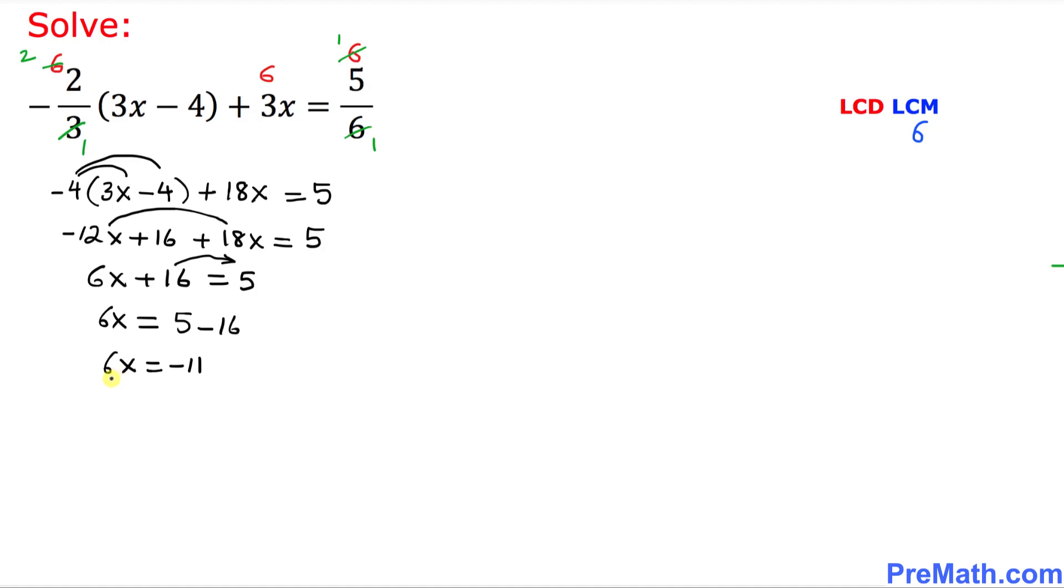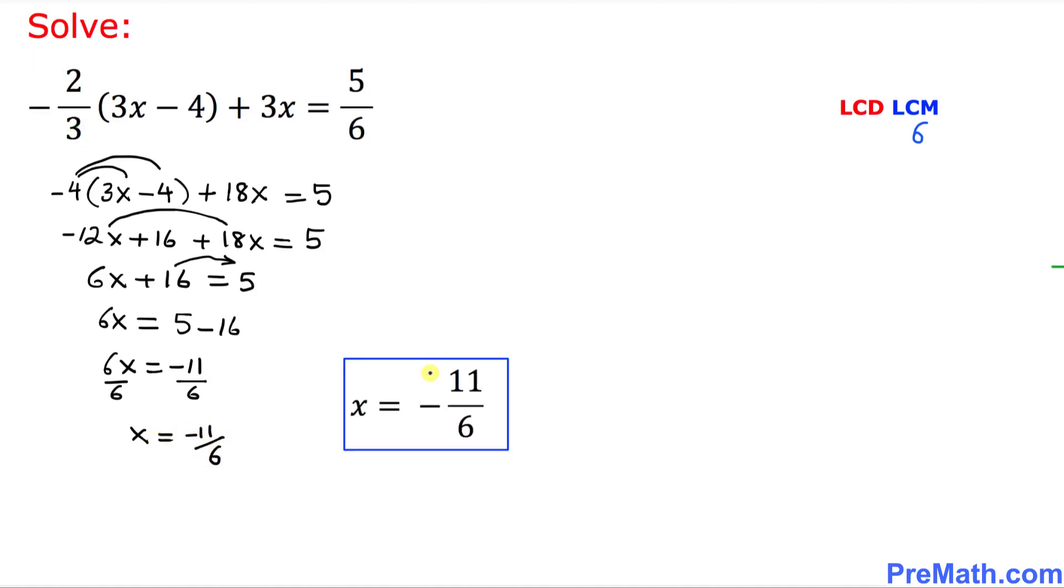Let's simplify. Let's isolate x. We're going to divide both sides by 6. So x turns out to be negative 11 over 6. Thus our solution turns out to be x equal to negative 11 over 6, and that is our answer.